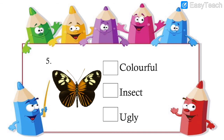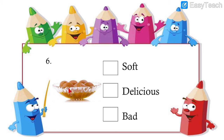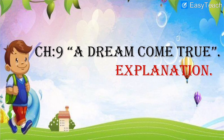Next is the image of an insect — it is a butterfly, and it is very colorful. It is an insect, but it is not ugly. So colorful and insect are the correct adjectives. Then the image of a sweet — it is very delicious, meaning very tasty, and also very soft. You might have eaten gulab jamuns — they are very soft and delicious. So in today's video, we solved that short grammar exercise as a quick revision.